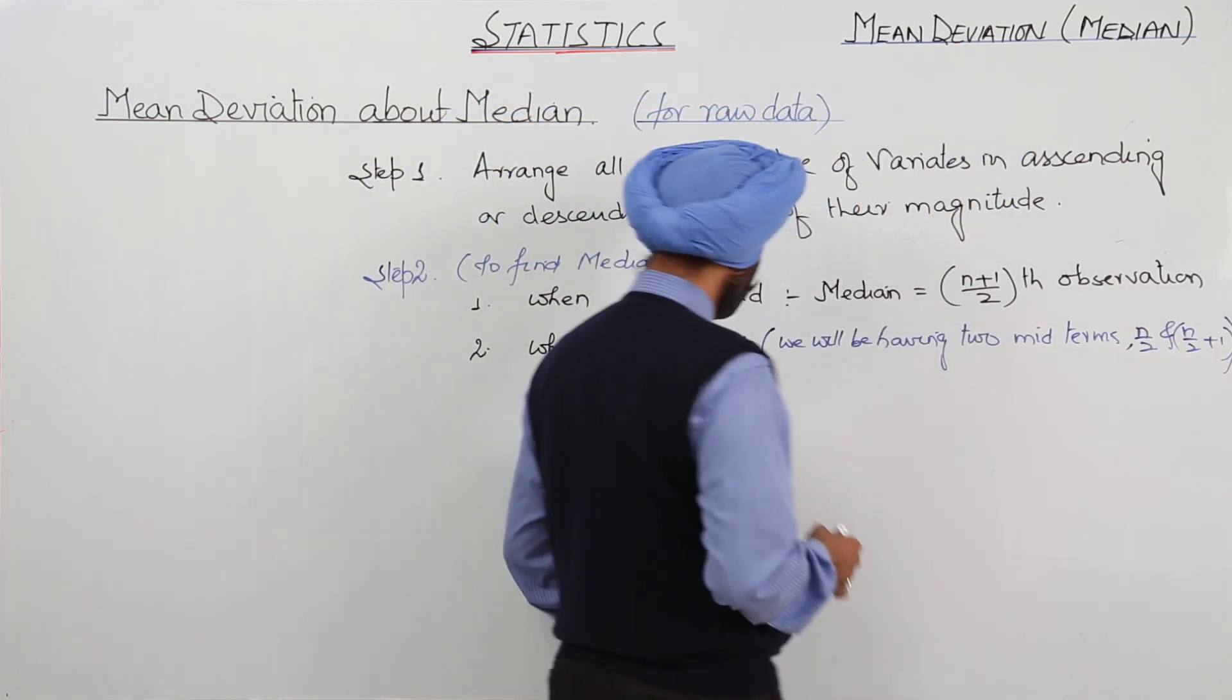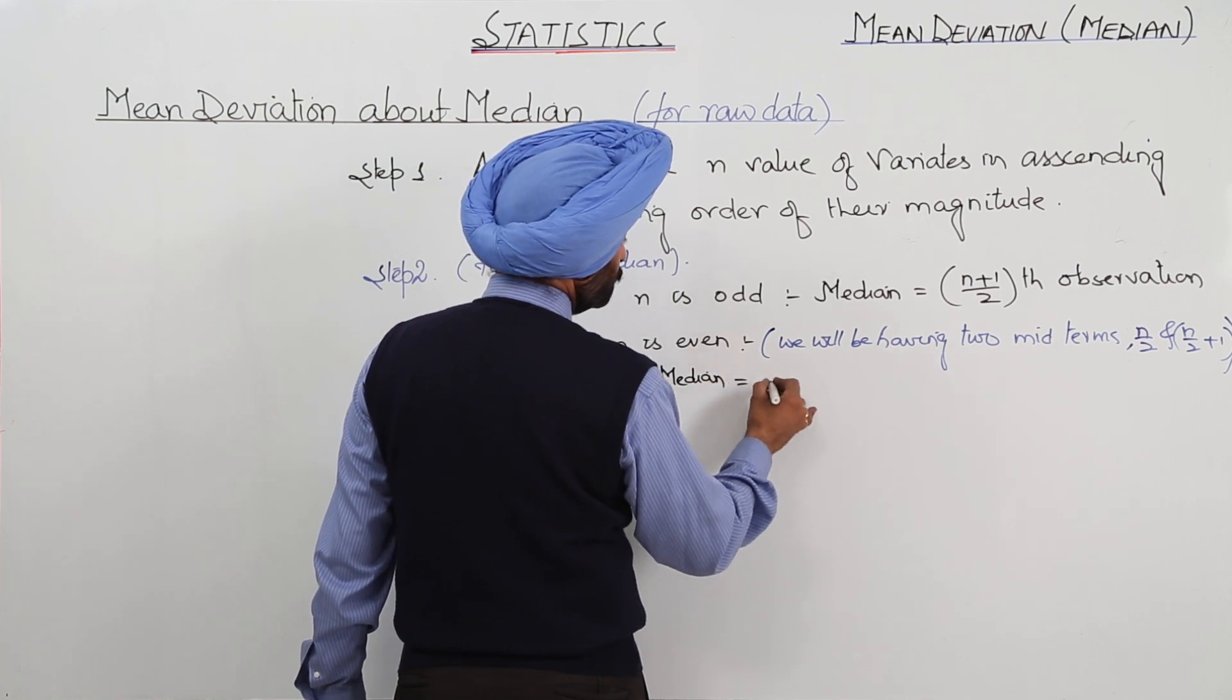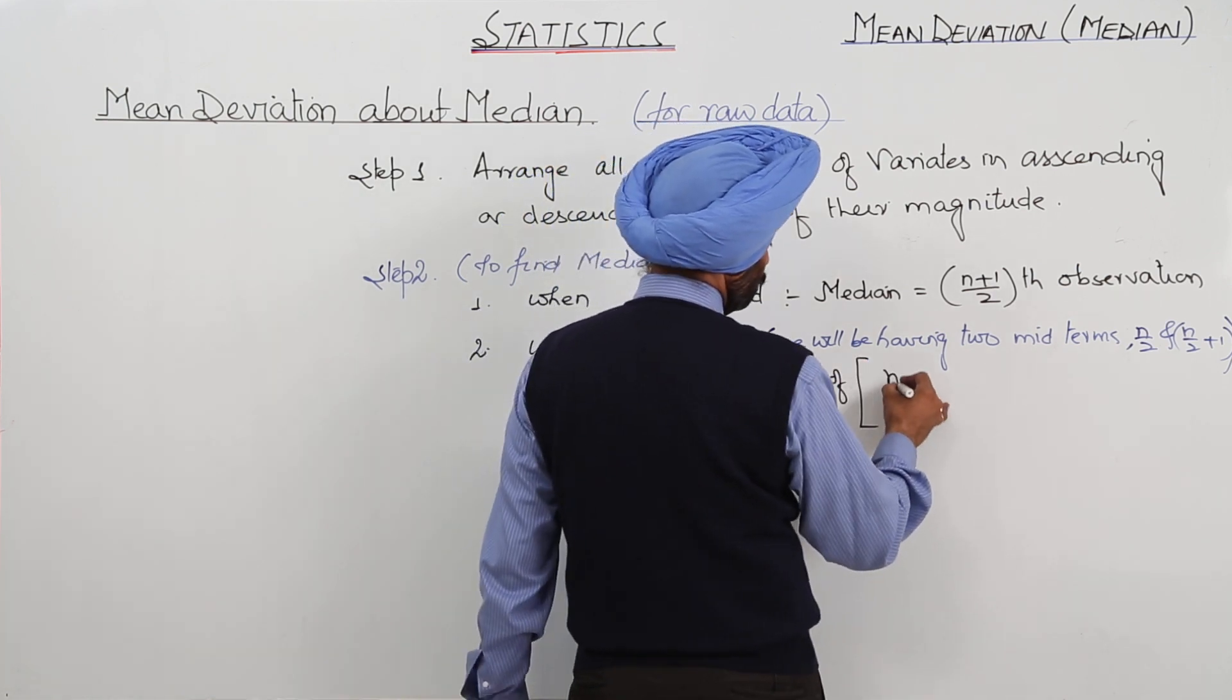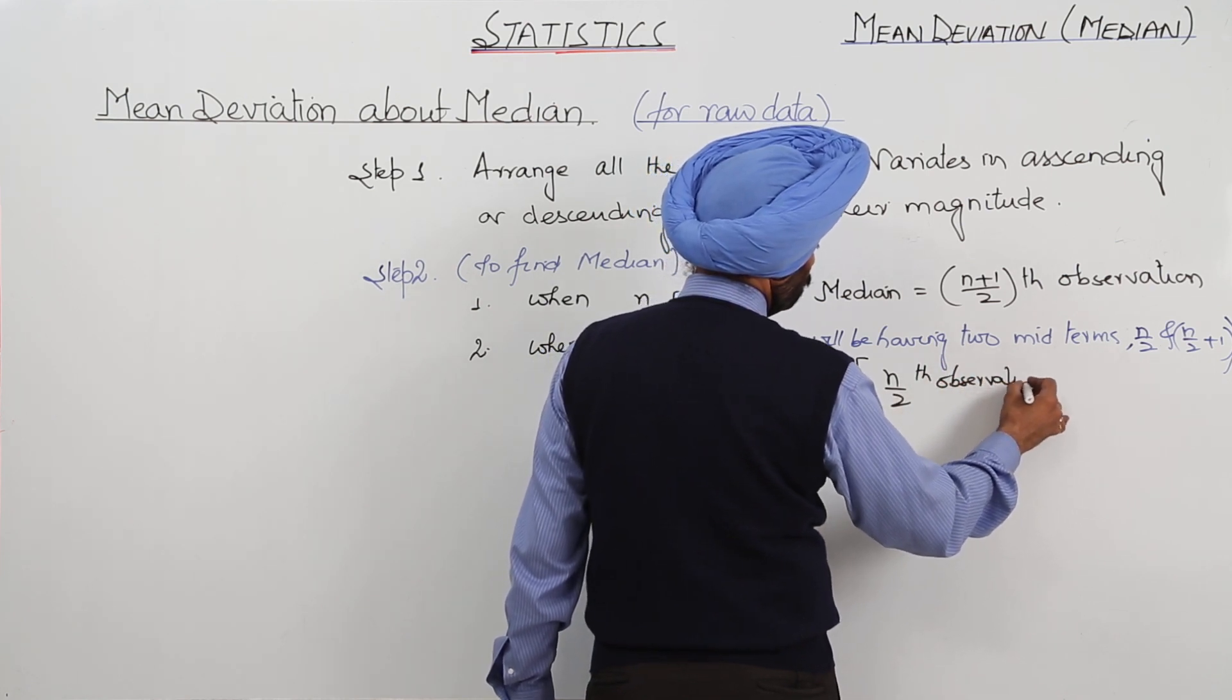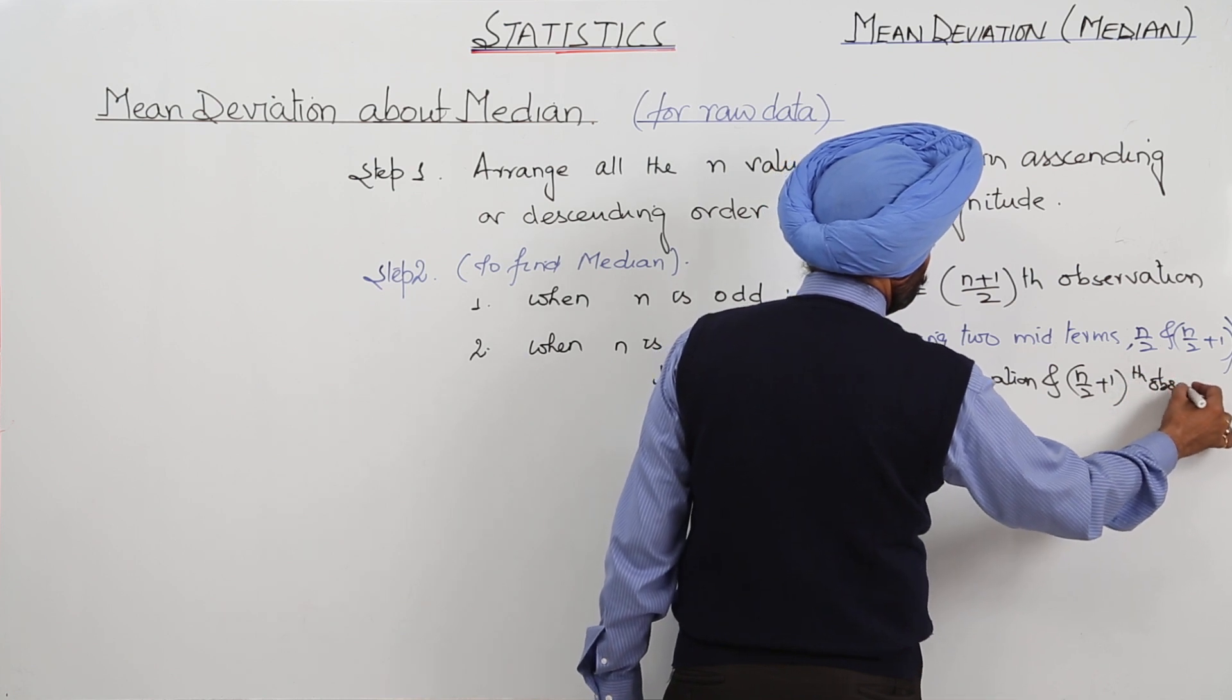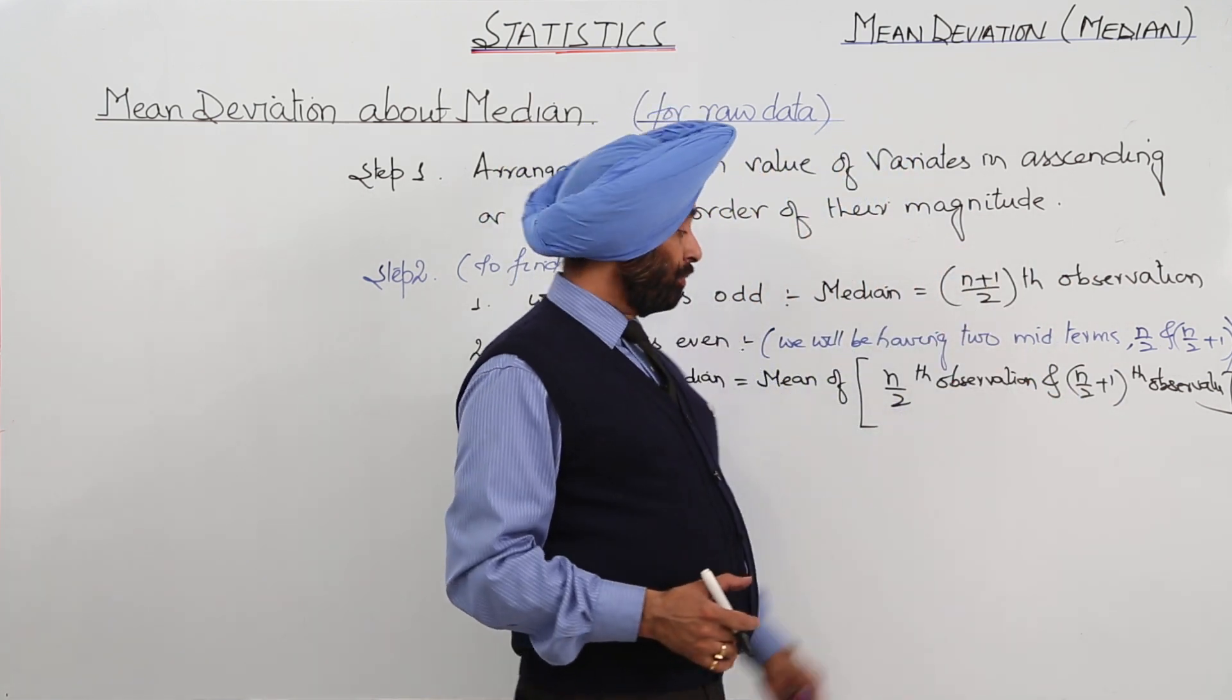So what will the median be? Median is equal to the mean of n upon 2th observation and n upon 2 plus 1th observation. Remember, this one and this one, a lot of difference is there.